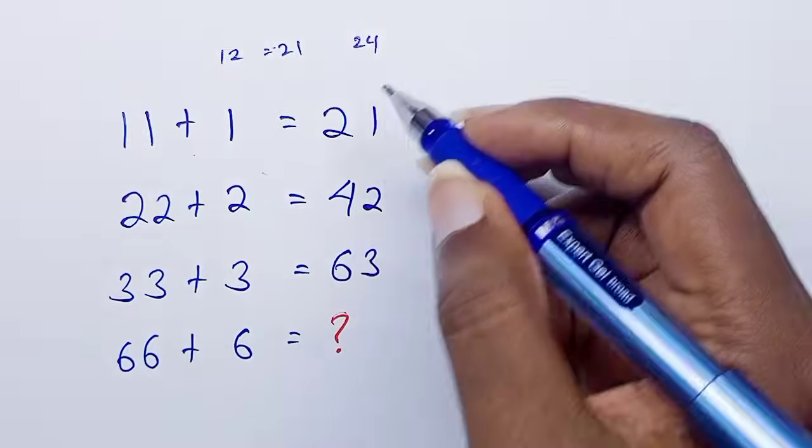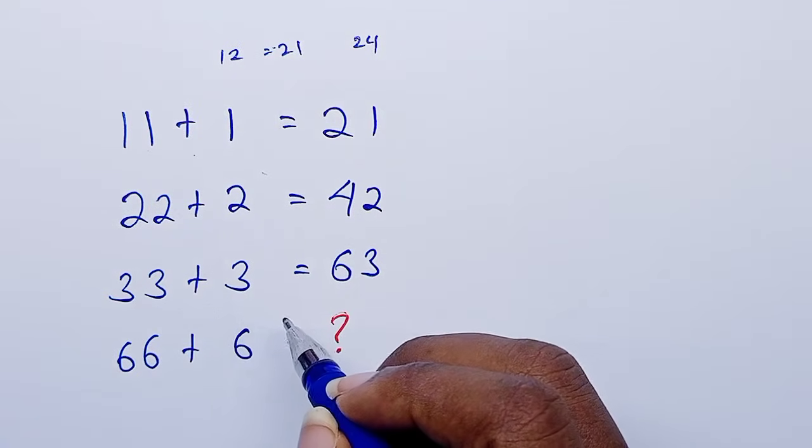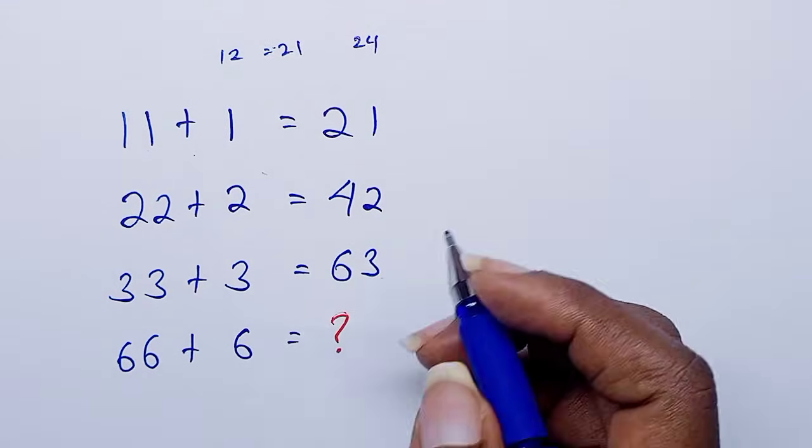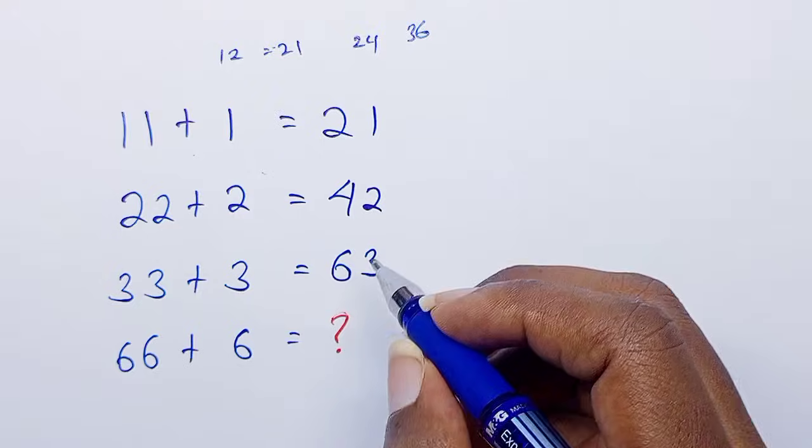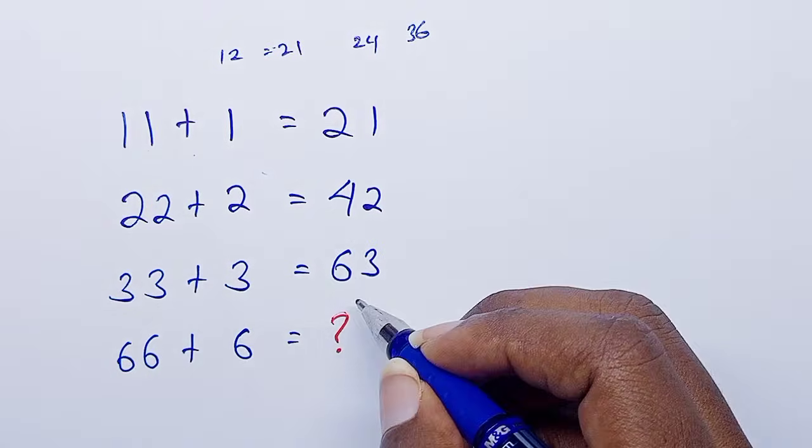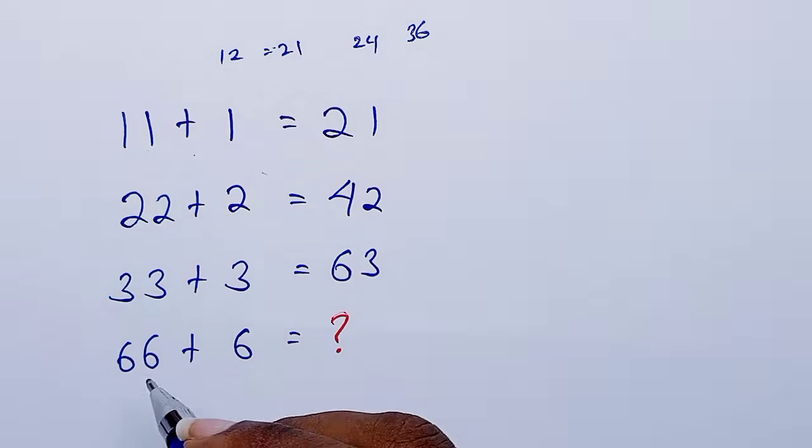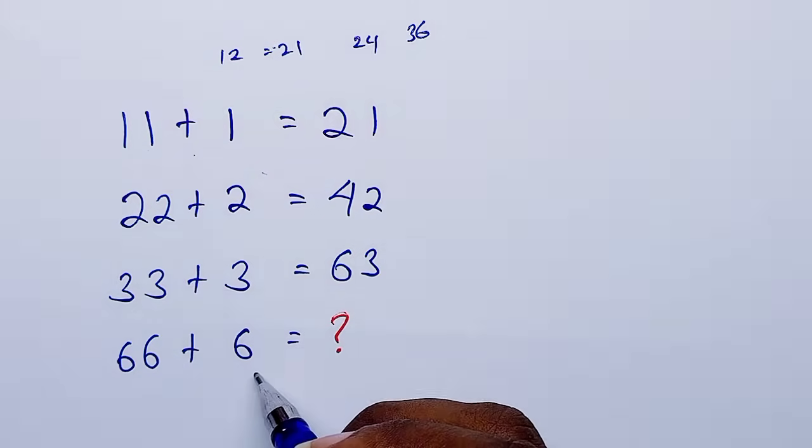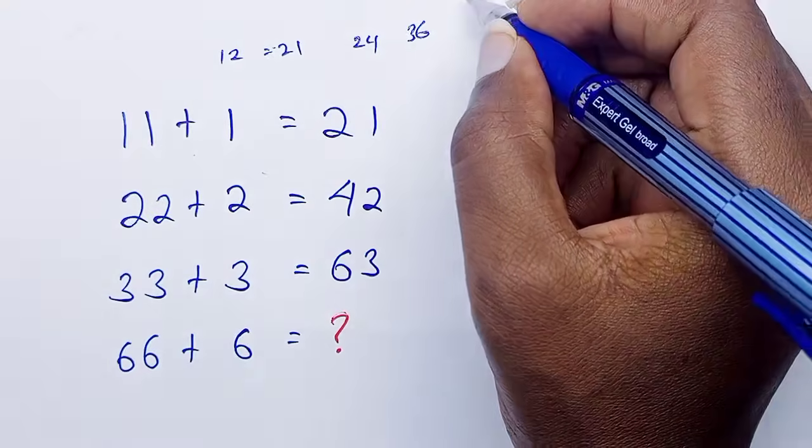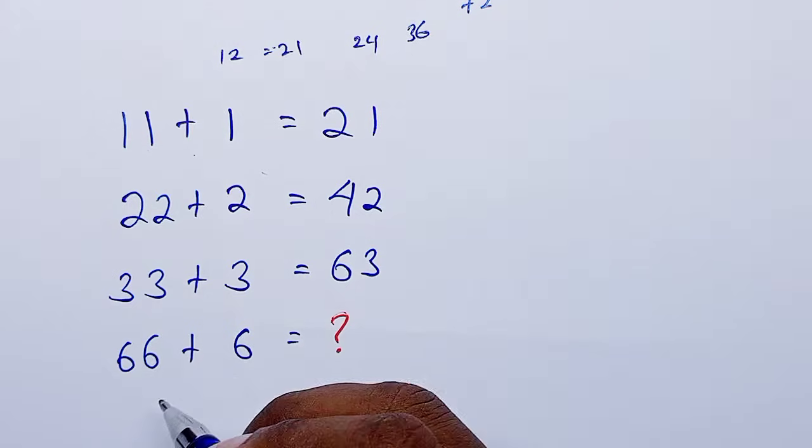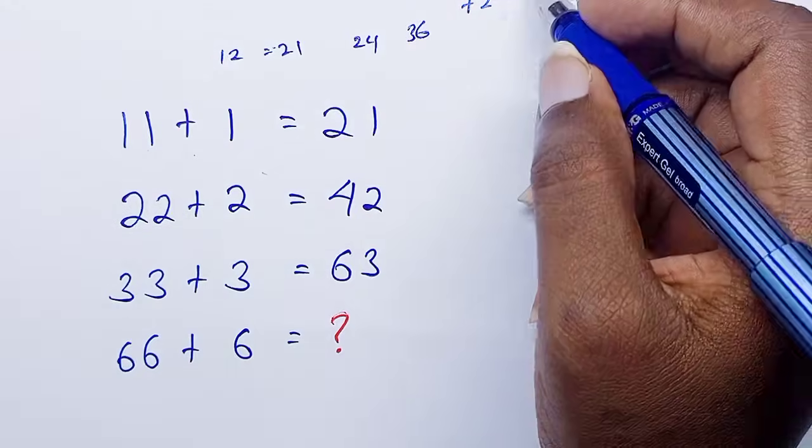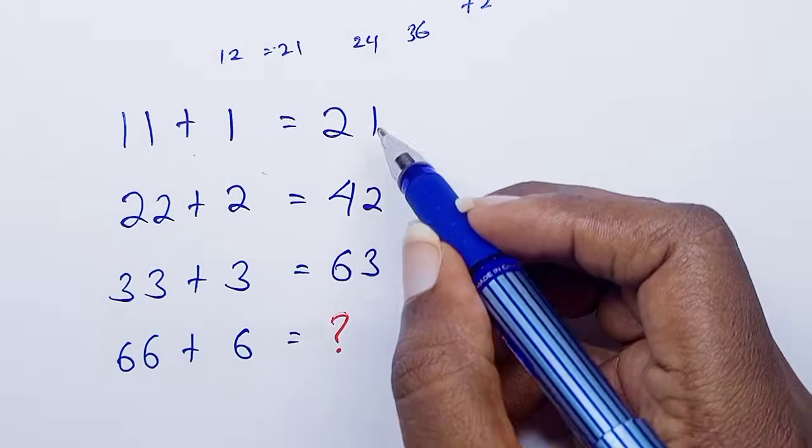Then 33 plus 3 is actually 36. It would be as if they've just flipped the 36 to get 63. So you would be tempted to also add this and this, which will give us 72. 66 plus 6 is 72. So according to this, you think you have to flip from 72, you get 27.